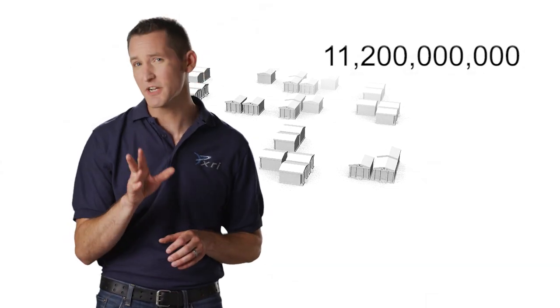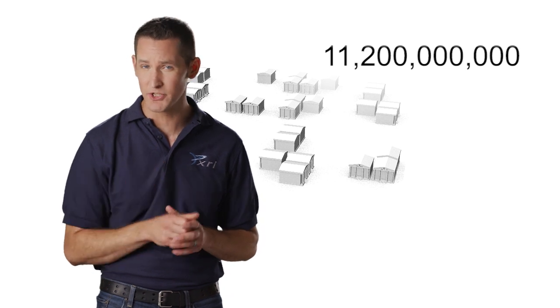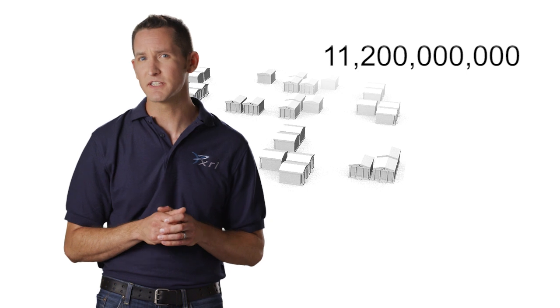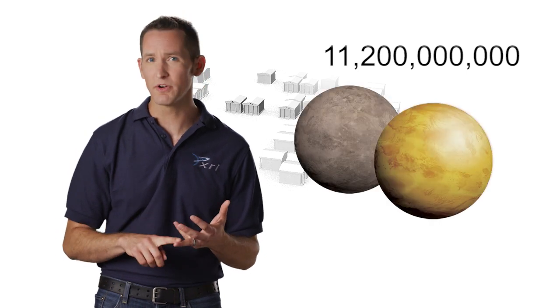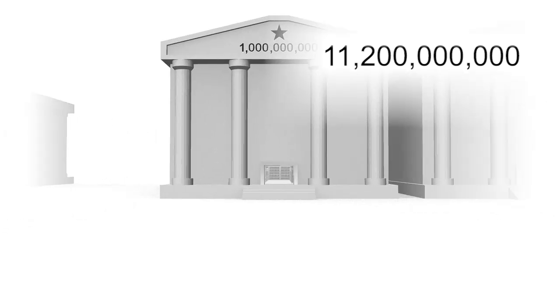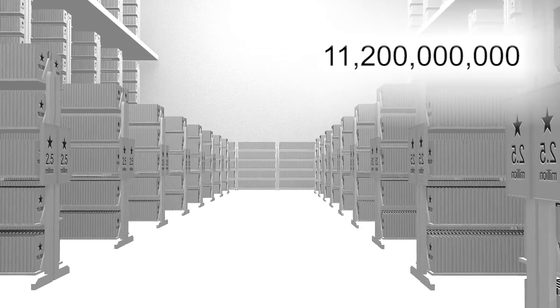Now, just because a planet lies in its star's habitable zone doesn't necessarily guarantee that it has life. There are still things to consider like atmosphere, weather, geology. So, let's be generous to the skeptics and say that 1 in 100,000 of those planets can support life in its current condition.